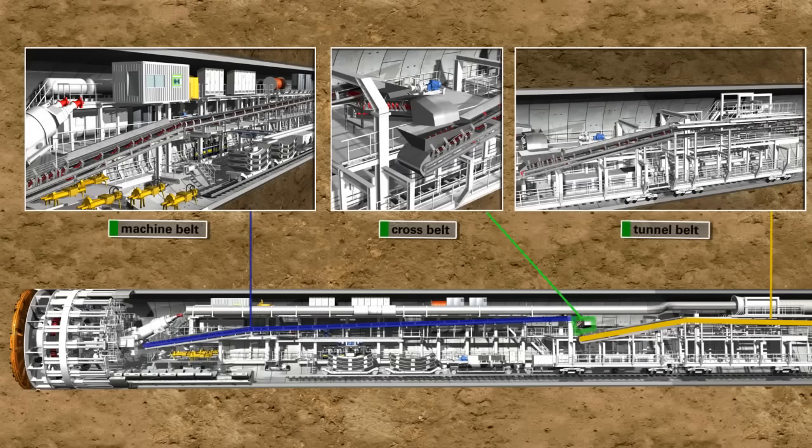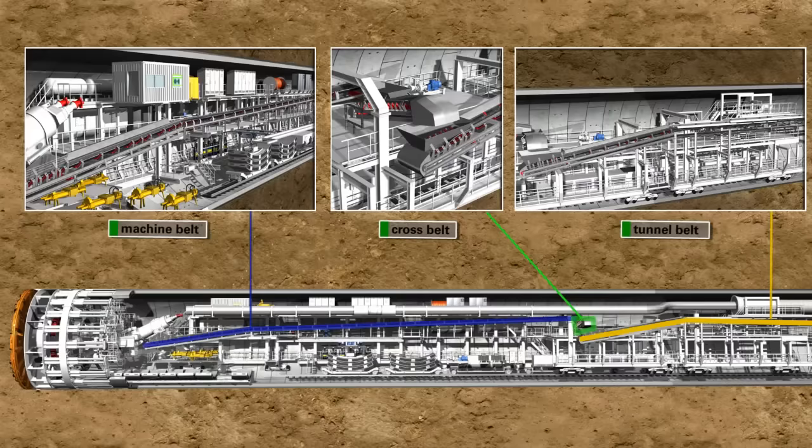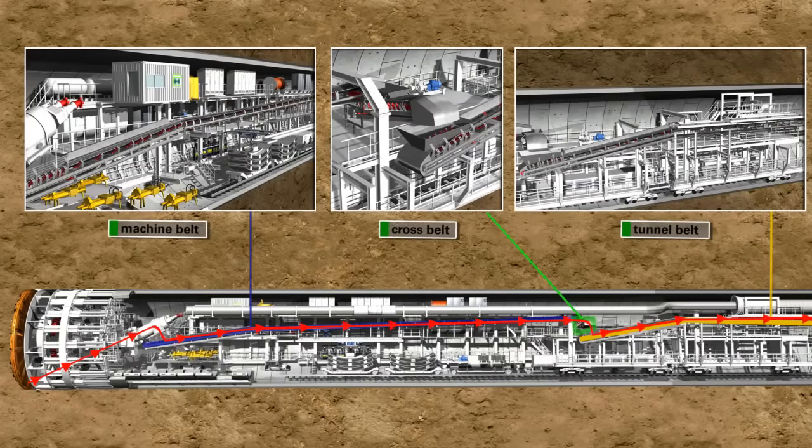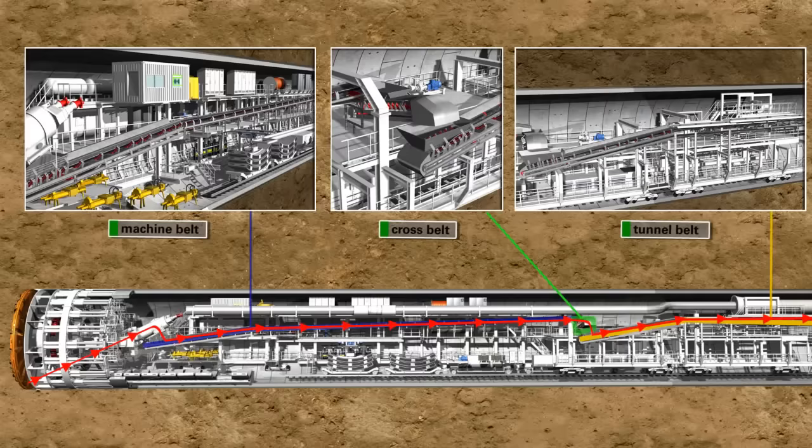The machine belt and the cross belt are two separate short conveyors, which are permanently installed on the tunnel boring machine. The tunnel belt takes up the excavated material from the cross belt in the backup area and transports it along the total tunnel section to the launch shaft.